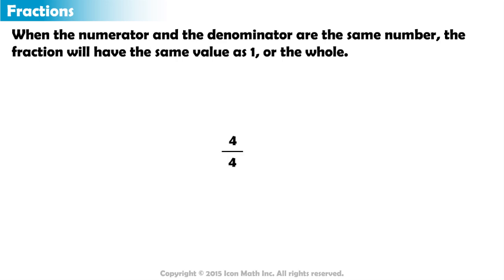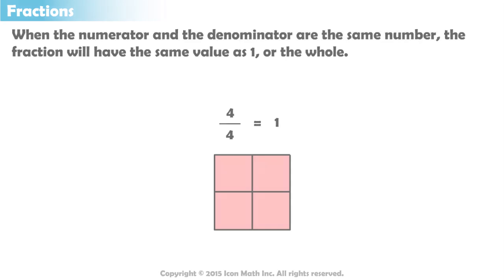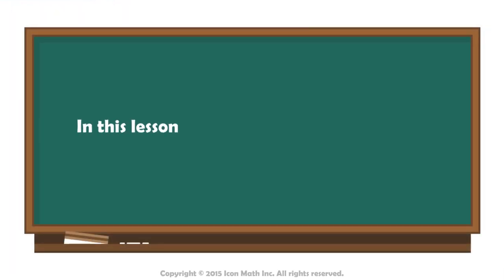For example, four-fourths is equal to one. Also, three-thirds is equal to one, and so on. Think about it - aren't four out of four equal parts the whole thing? So four-fourths equals one. In this lesson, you learned what a fraction is.